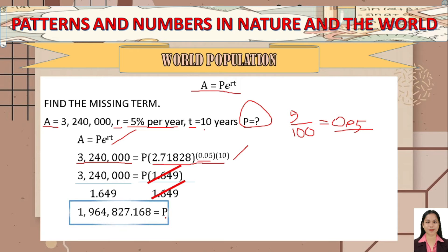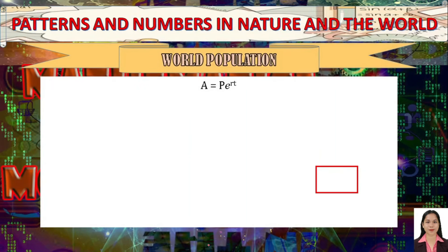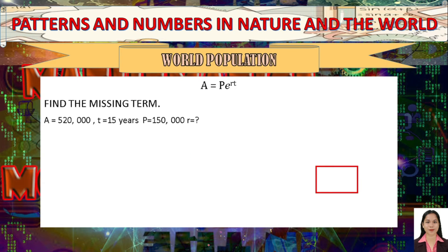Rounding to a whole number, P ≈ 1,964,827. This is the present population.